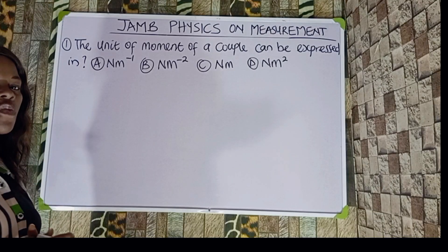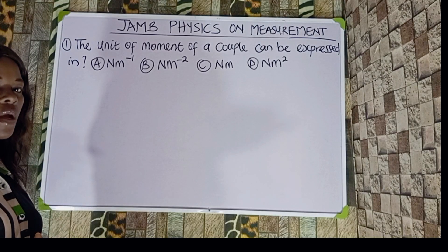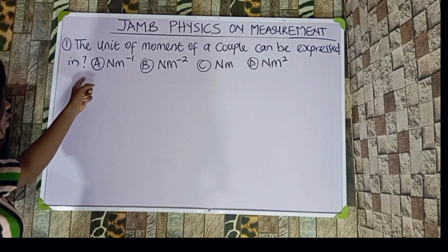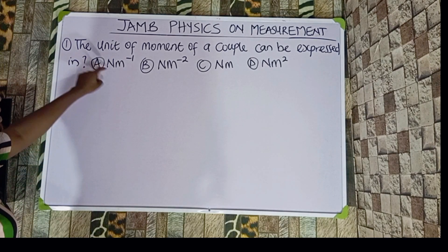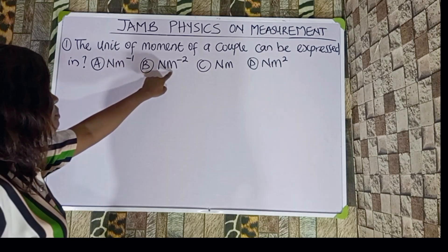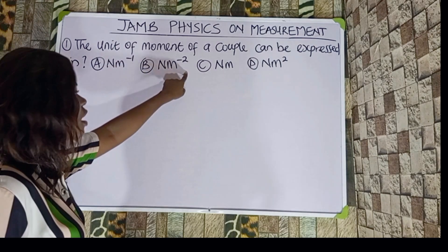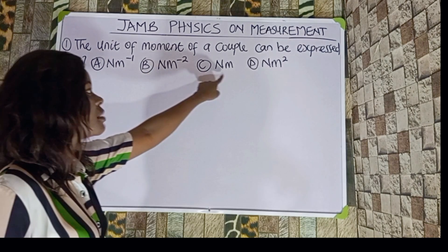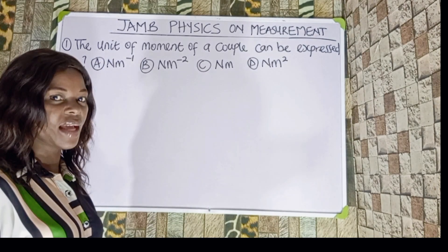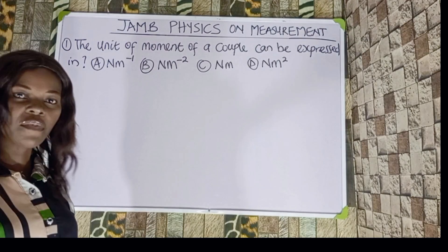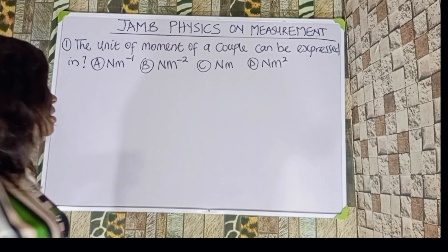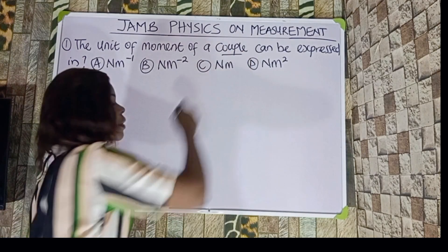The unit of moment of a couple can be expressed as what? Option A is Newton per meter, option B is Newton per meter square, option C is Newton meter, and option D is Newton meter square. To solve this question, the first thing that will come to our mind is: what is a couple?